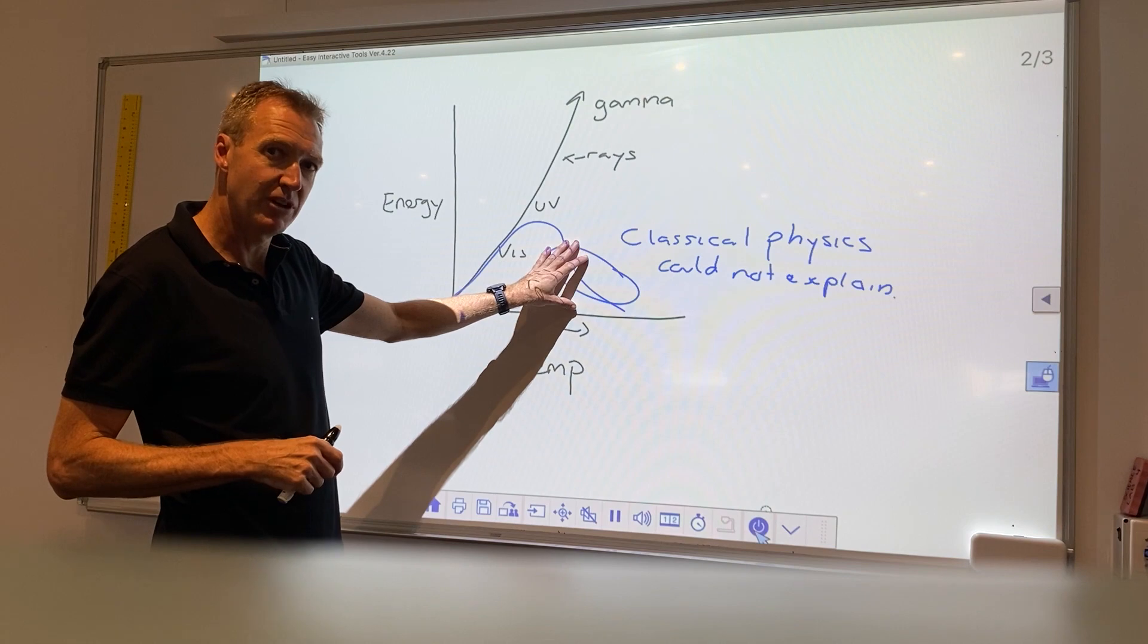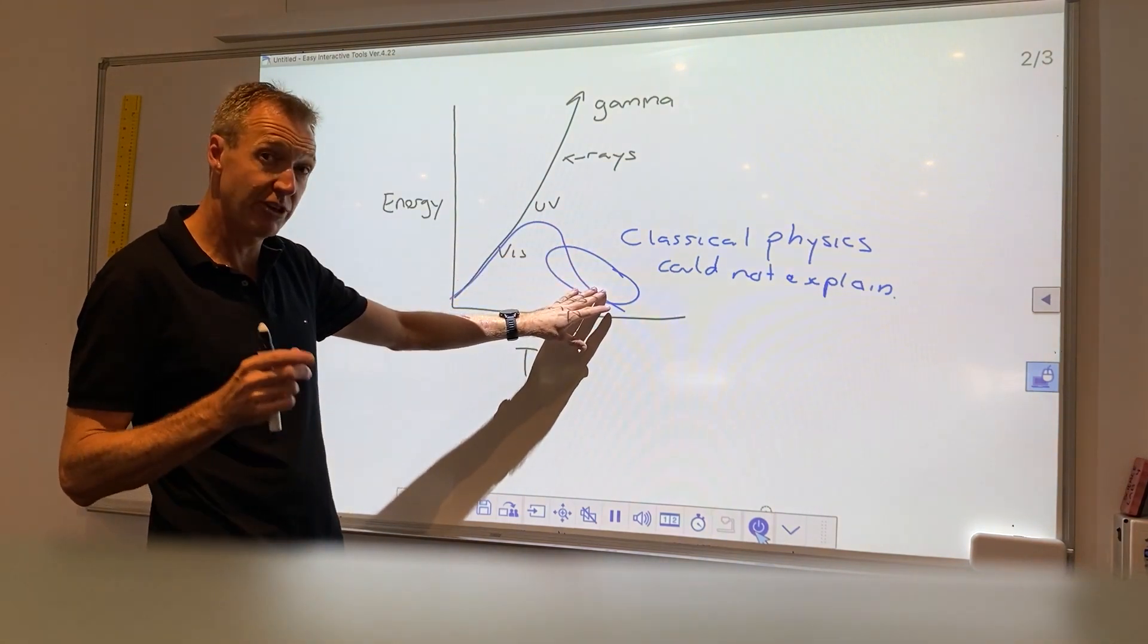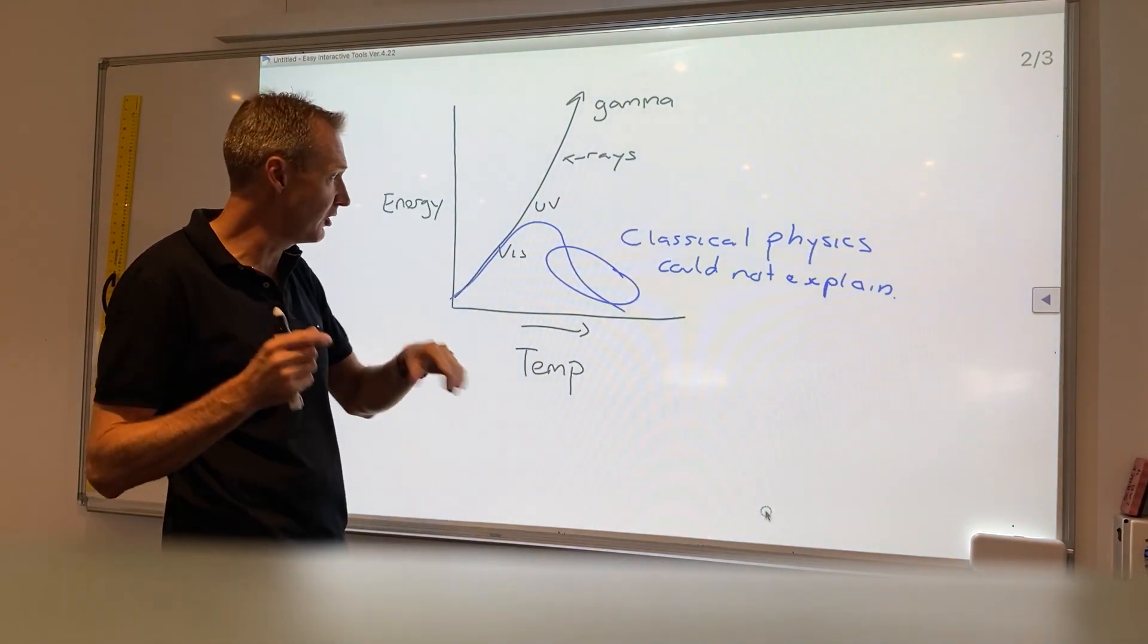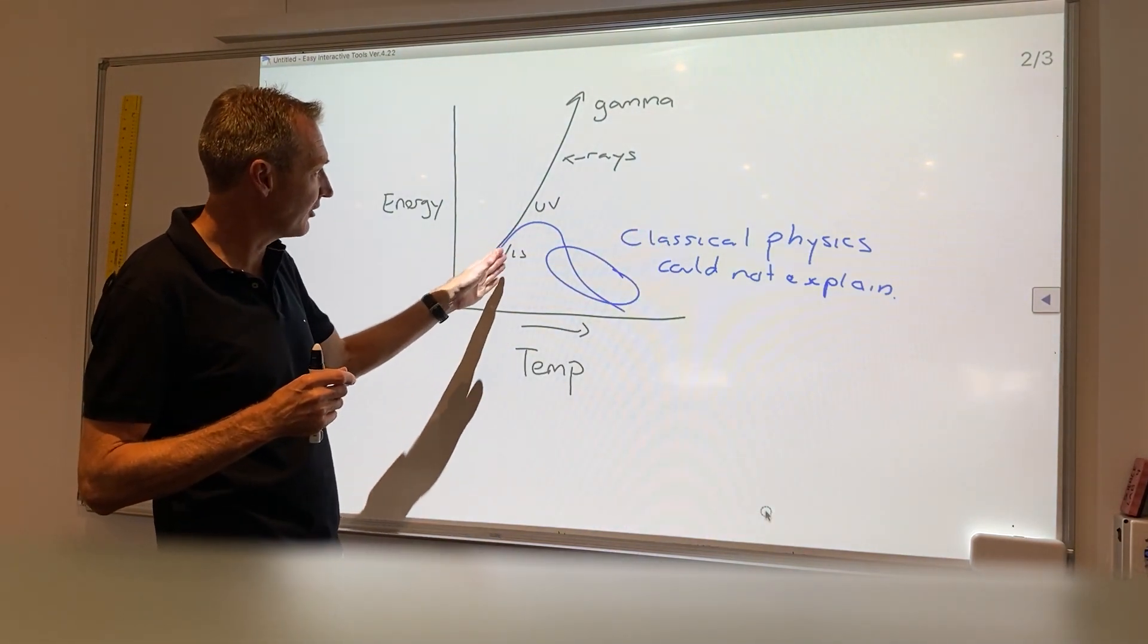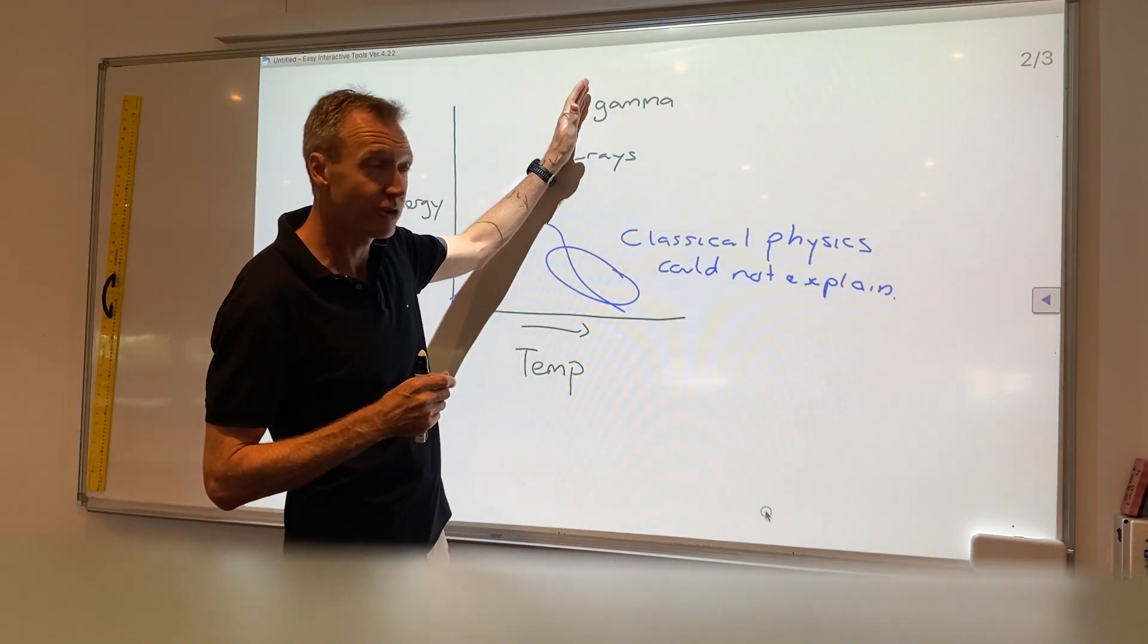So there needed to be some new ideas, and Max Planck started to get some pretty good ideas. He still tried to use classical physics, but he produced a new idea that there was actually chunks of energy coming out rather than a continuous wave.